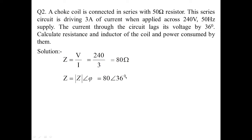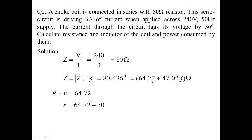The total circuit impedance is 240/3 = 80 ohms in magnitude, with phase angle 36 degrees. Converting from polar to rectangular form using a calculator: Z = 64.72 + j47.02 ohms. This XL value is 47.02 and the real part is 64.72. Since total real component = R + r = 64.72, and the non-inductive resistance R = 50 ohms, the internal resistance of the choke coil is r = 14.72 ohms.